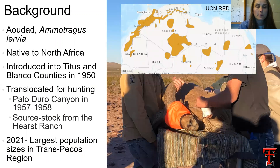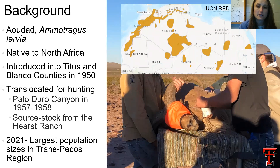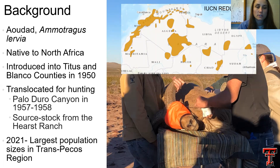Aoudad are also known as Barbary sheep. Their scientific name is Ammotragus lervia. Throughout this presentation I'll refer to Aoudad as Aoudad as well as Ammotragus lervia. Aoudad are native to North Africa, ranging from Morocco to Egypt. They were first introduced into Texas into two counties in 1950. A couple years later, Aoudad were introduced into Palo Duro Canyon to provide additional hunting opportunities. We do note that these individuals were sourced from the Hearst Ranch located in central California. To date, the largest population sizes are in the Trans-Pecos region of Texas.